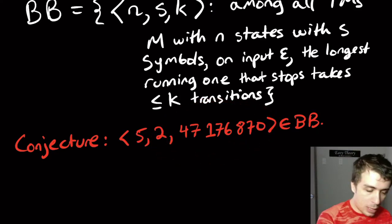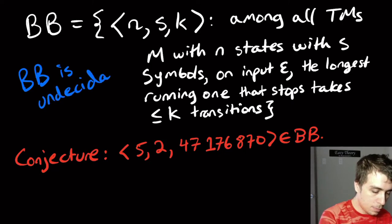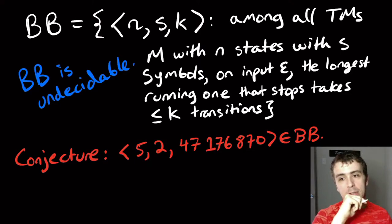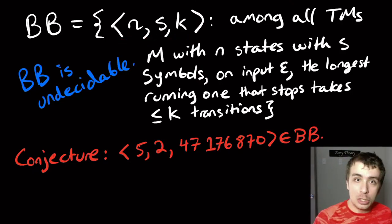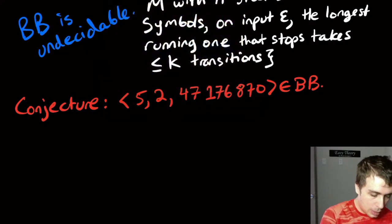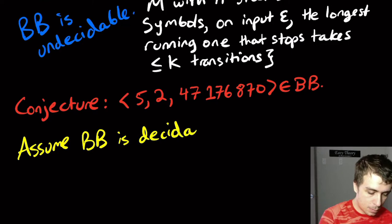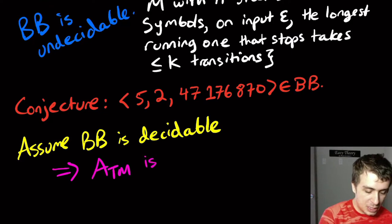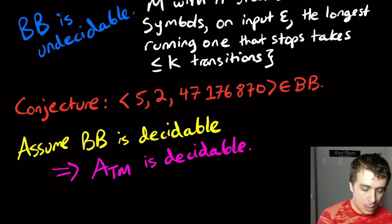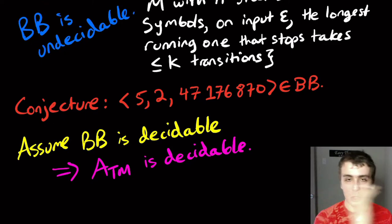What I want to show is that the language BB is undecidable. It's not that difficult to prove, but it gets you thinking differently because we're not encoding a machine here — we're encoding additional information like the number of states and symbols. We'll assume that BB is decidable, and then show that the acceptance problem for Turing machines (ATM) is decidable based on that reasoning. ATM asks whether a given Turing machine accepts a given input.